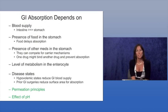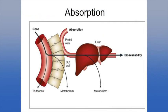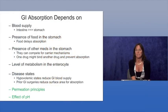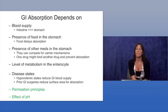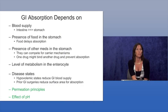The first factor affecting GI absorption is blood supply. What is the blood supply to the gut that permits absorption of the drug from the lumen of the GI tract into the liver? The small intestine has a more dense blood supply than the stomach, and in reality more drugs are absorbed from the intestine than from the stomach.